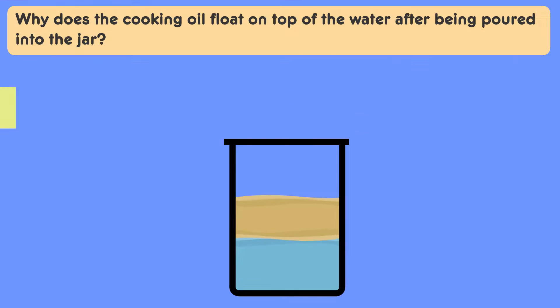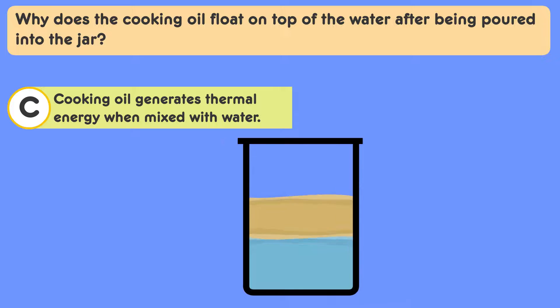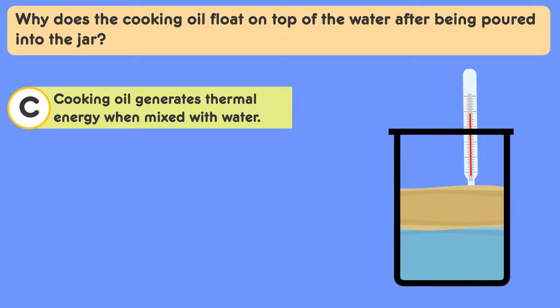Let's look at answer choice C. Cooking oil generates thermal energy when mixed with water. So let's think about this. Do you know of any temperature changes that take place when oil and water are combined? Now let's analyze this. Consider how such changes could inform us about the properties of each liquid.